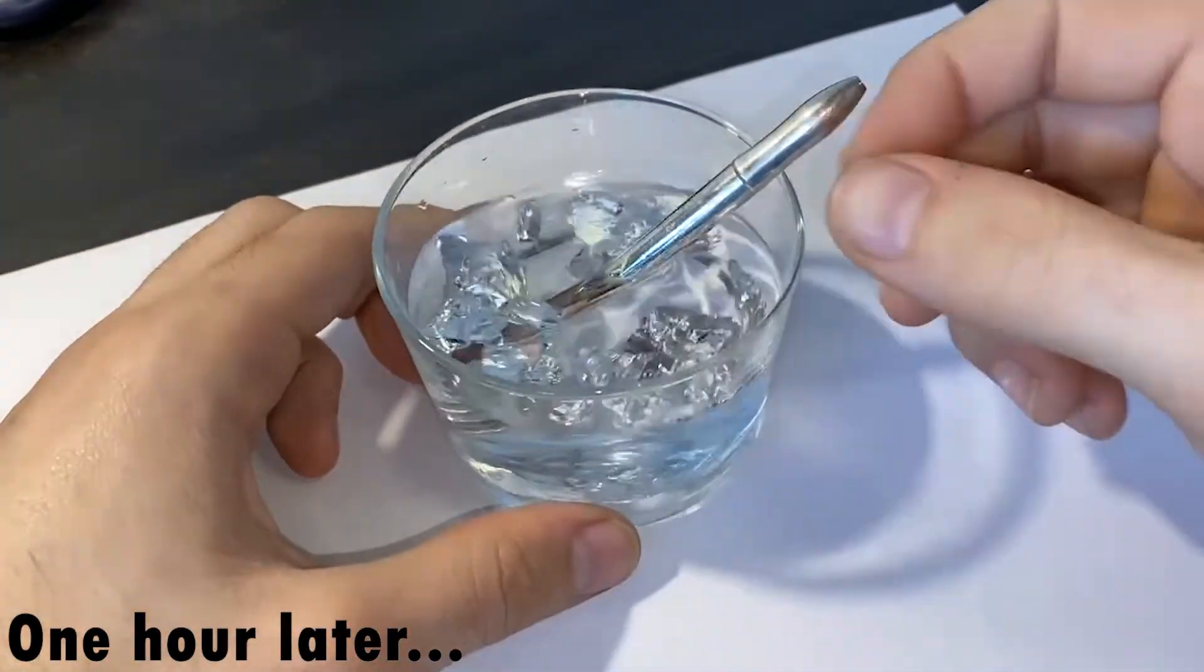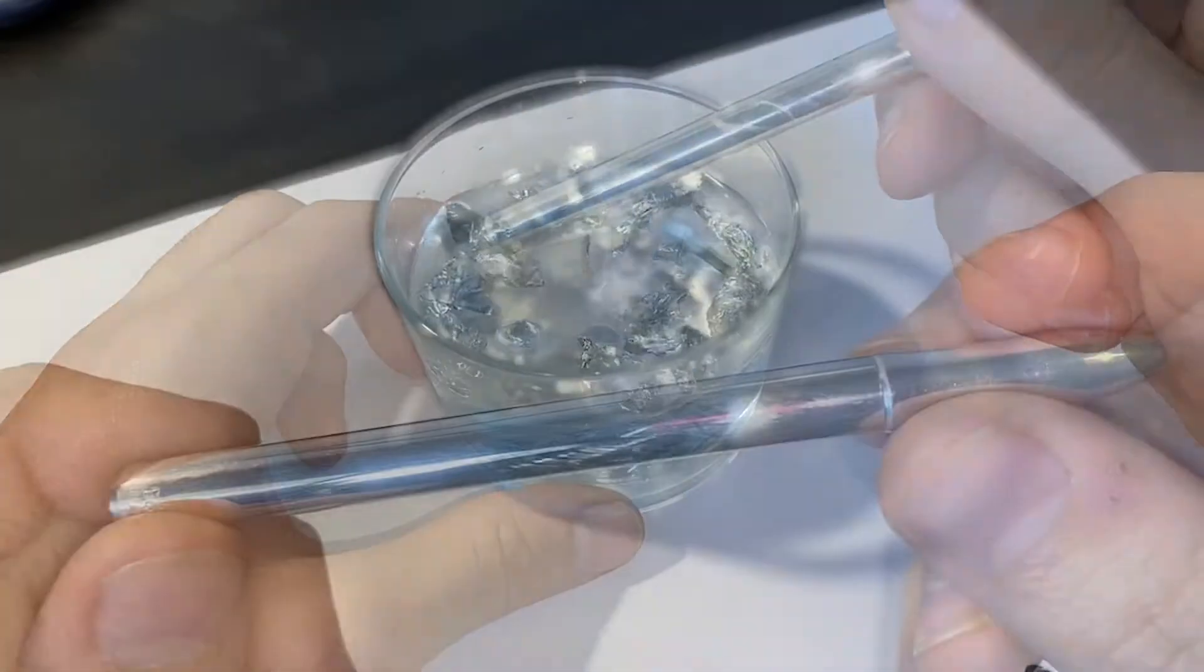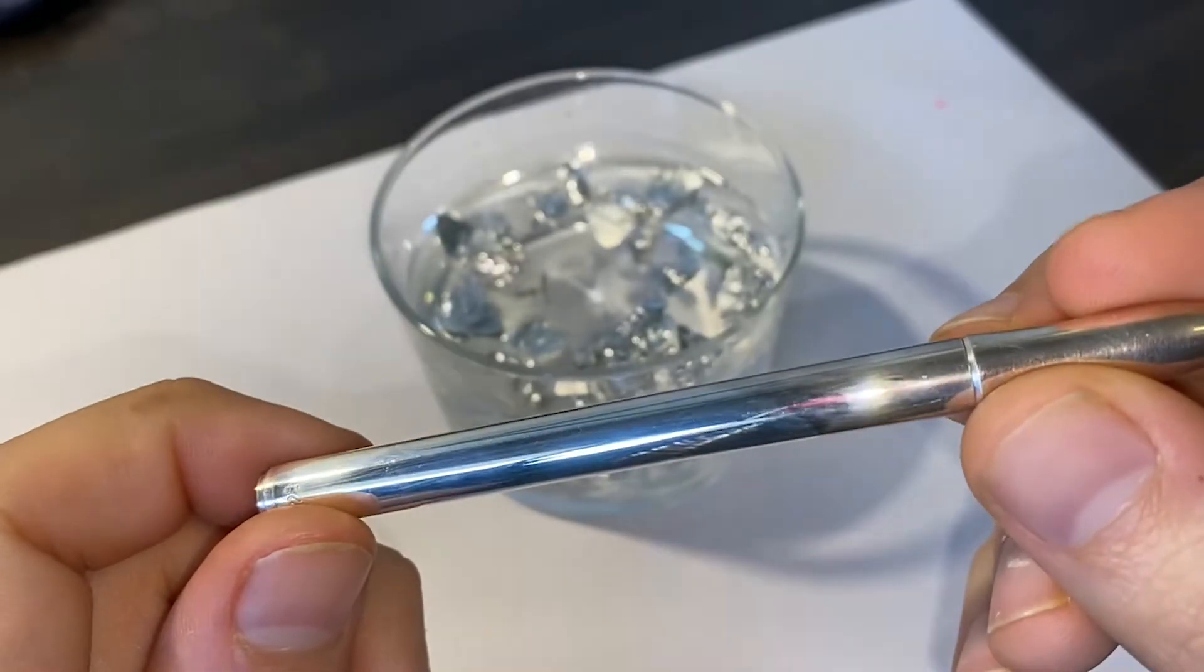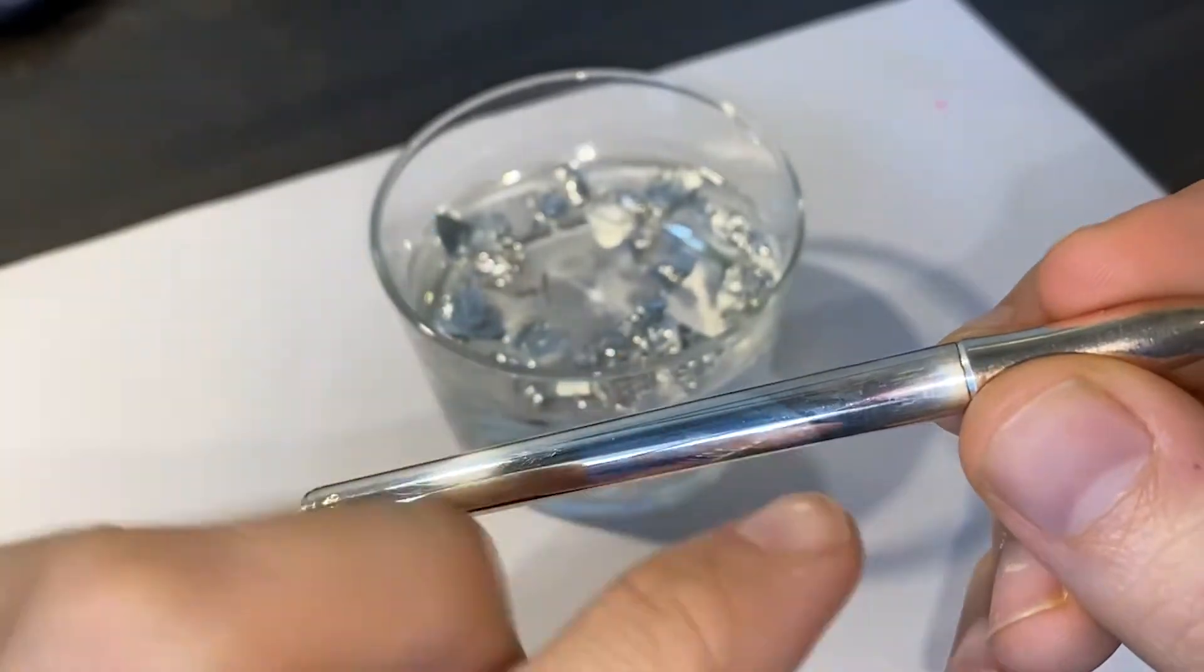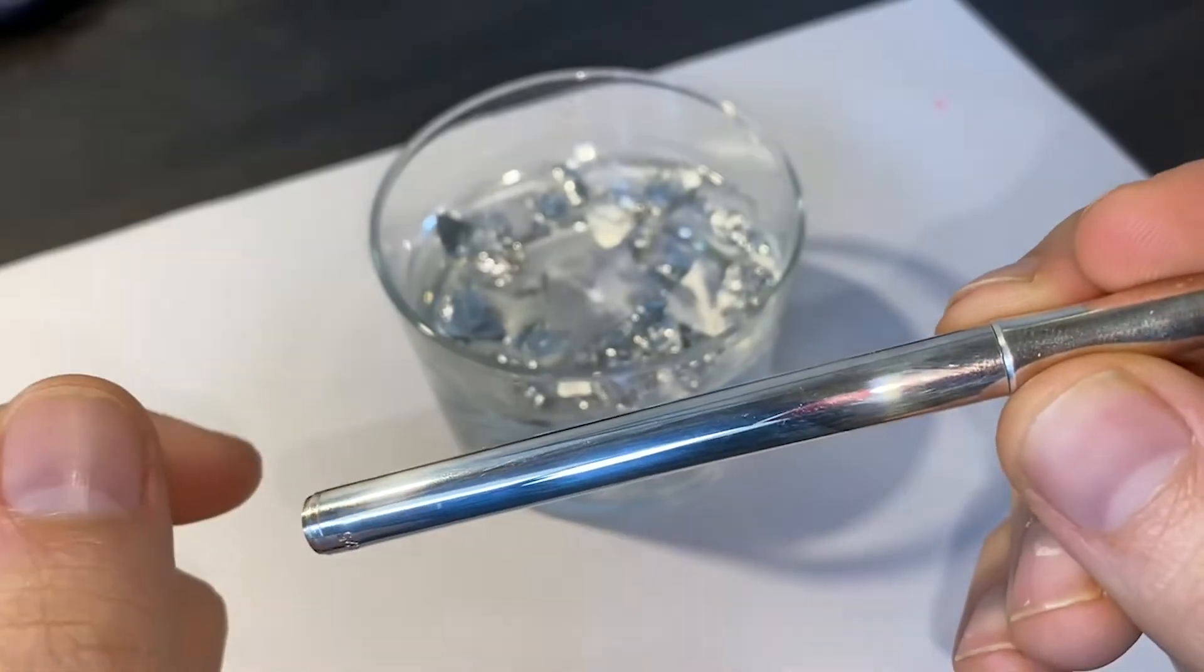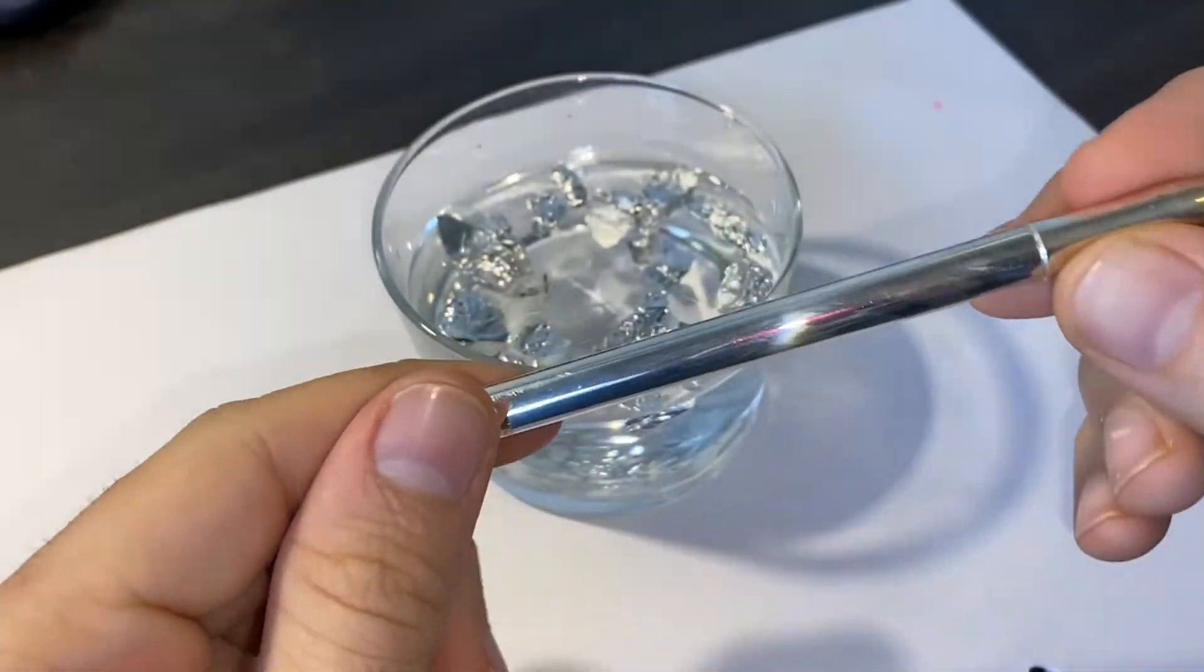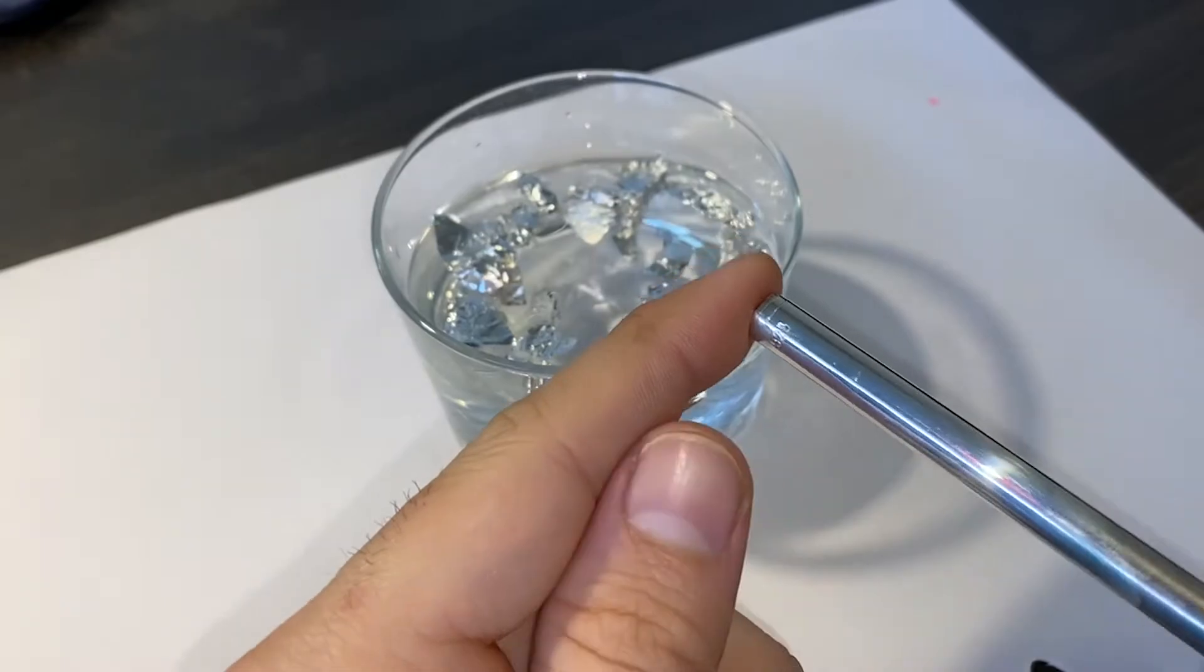So I've left the pen soaking here for a while and let's see what we've got. You can clearly see the mark where the water level was. So we have converted silver oxide into silver metal and we've oxidized aluminum foil into aluminum ions.